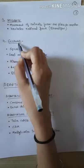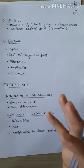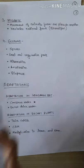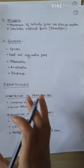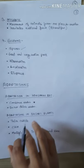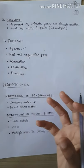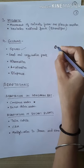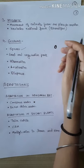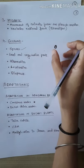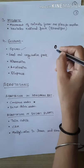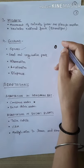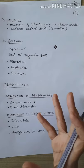Aur last one is suspend. Suspend ka matlab hota hai kisi cheez ko thodi der ke liye rok dena. Suspend process mein sabse pehli cheez hai ek spore ka formation. Jaise bacteria, fungi aur kuch lower plants mein ek spore ban jaata hai jiske charo taraf kaafi thick wall hota hai — jise cyst bhi keh sakte hain. Yeh thick wall jab tak unfavorable condition hoga, spore ke charo taraf rehega. Aur jaise hi favorable condition hoga, yeh wall break down ho jaata hai aur woh spore germinate ho jaata hai.